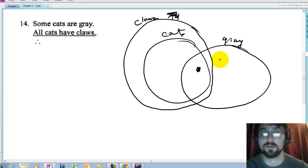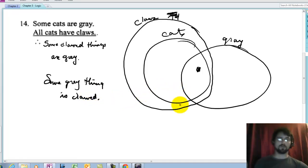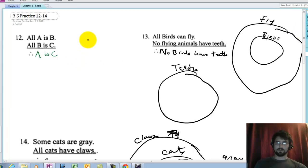Or at least one gray thing has a claw. Anything else we could conclude? No, I think that's it. Or some clawed things are gray. Either that or some gray thing is clawed. And there you go. That is our example. A is inside C. That is the end of this video.